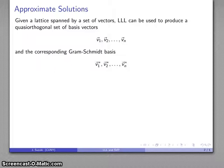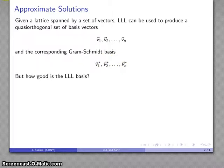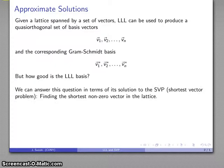Remember that our LLL algorithm began with a lattice spanned by some set of basis vectors, and we can apply LLL to get some set of quasi-orthogonal basis vectors and a corresponding set of Gram-Schmidt basis vectors. The natural question to ask is, after we've done all that work, how good is the LLL basis? We can answer that by answering how effectively it solves the shortest vector problem — finding the shortest non-zero vector in the lattice.